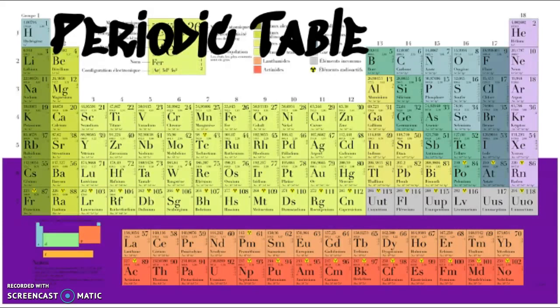Fun fact, this version is actually in French and if you look closely some of the elements, though they all share the same symbols in different languages, may have different names. Nitrogen for example is called azote in French and is still represented by the symbol N. All languages use the same symbols for our different elements.